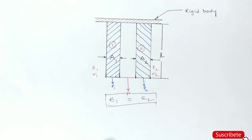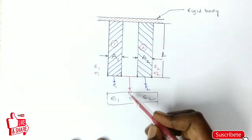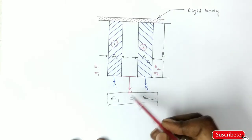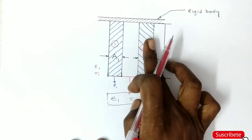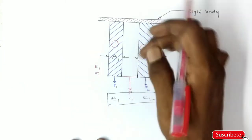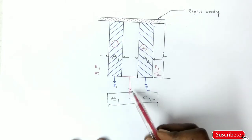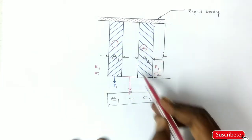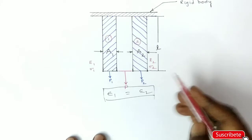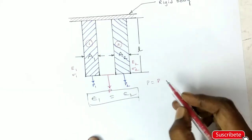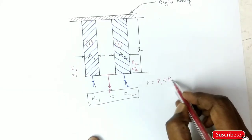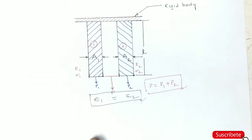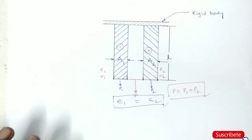And second point: P is the total load. The sum of material 1 applied load and second material applied load. So P equals to P1 plus P2. These two are very important points.